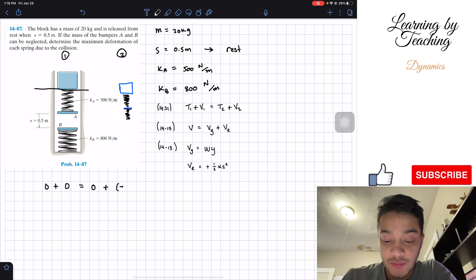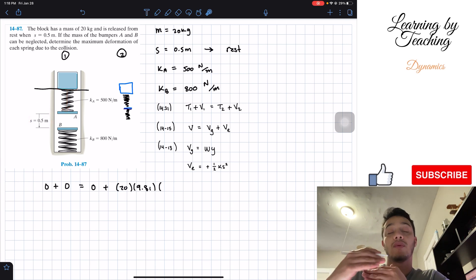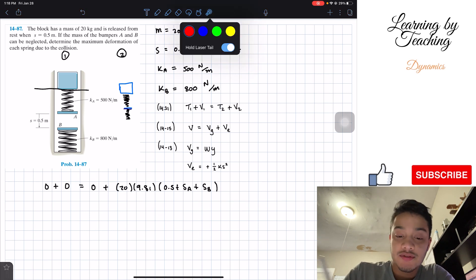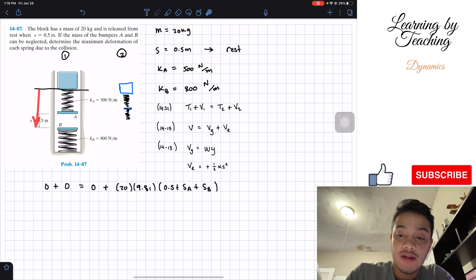Let's start with the gravitational potential. We have the weight times y, which is the height. So the weight is 20 kilograms times the acceleration 9.81 times the height. How much down did this block go from here? For sure it went 0.5 meters, however it also went down the amount that the springs were compressed. So we got 0.5 meters plus the amount that spring A got compressed plus the amount that spring B got compressed. Since we're going down, this will be a negative gravitational potential.